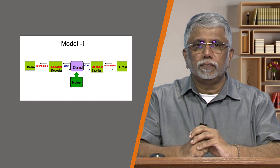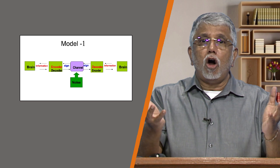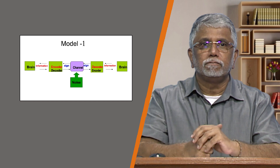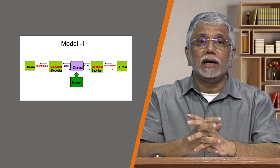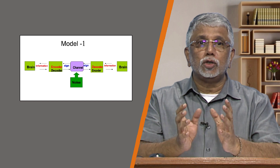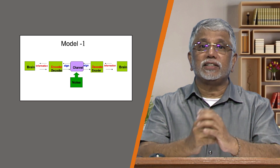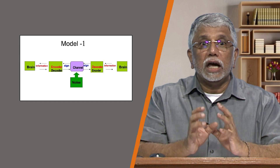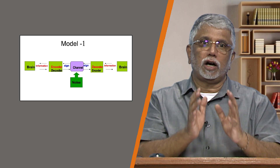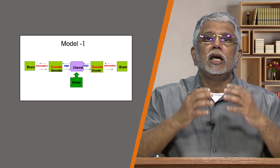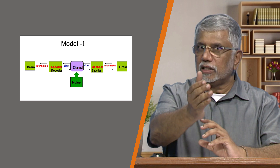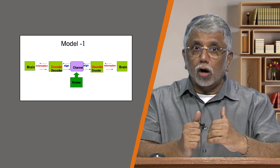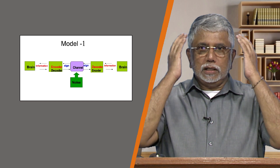The brain has a thought, but thoughts cannot travel on their own. If thoughts could travel, all we'd have to do is think and it would automatically get deposited in the receiver's brain — that would be telepathy. As of now, we need a vehicle for our thoughts and ideas to travel through the channel. The channel is either air or wire or a combination of both.